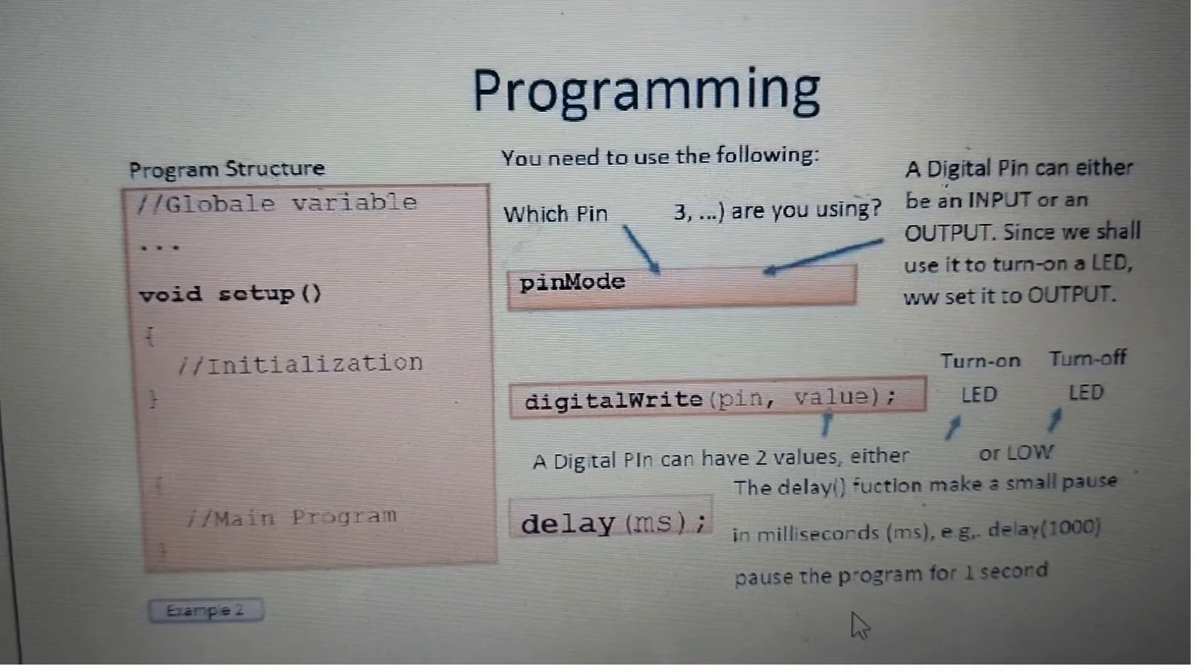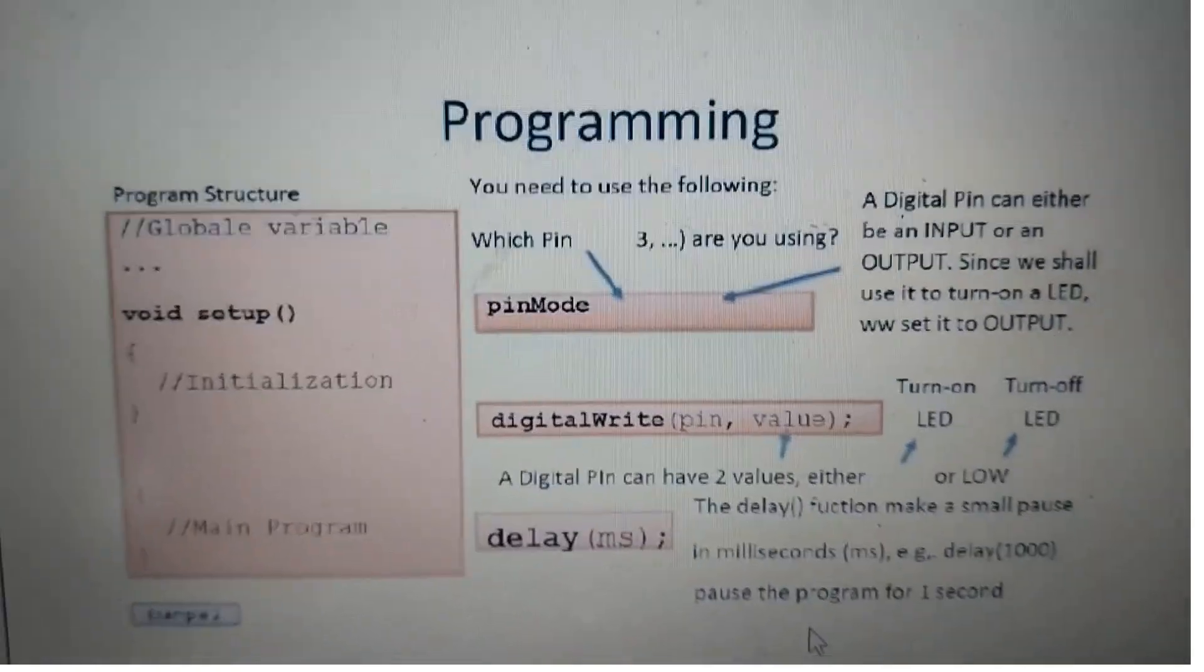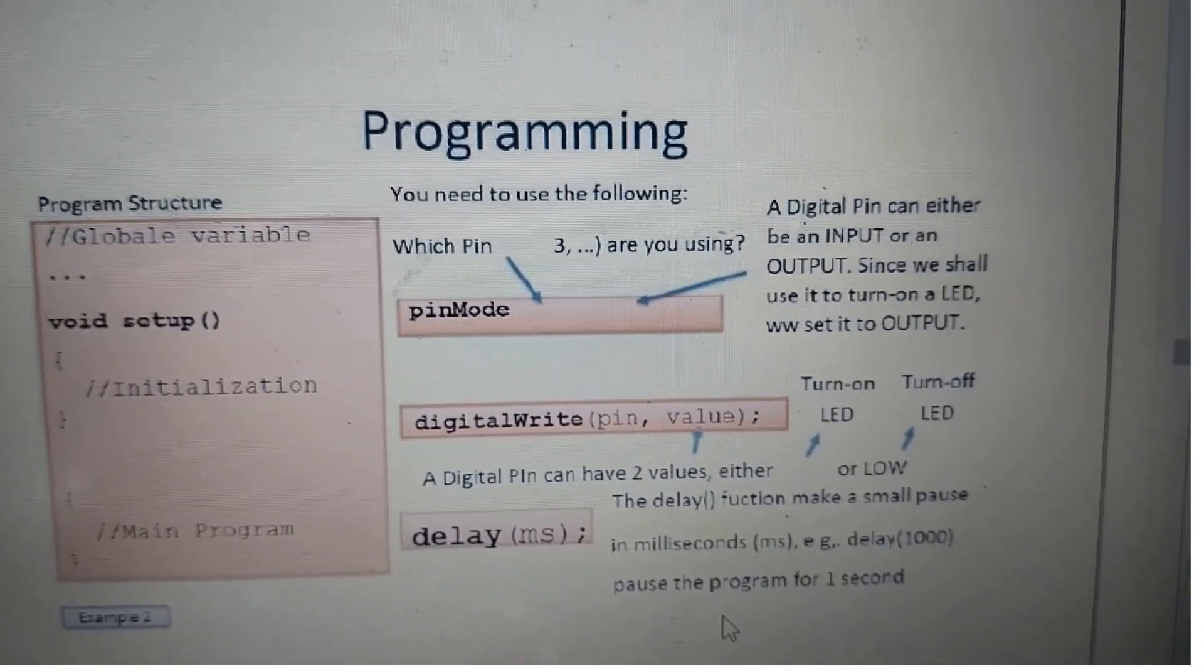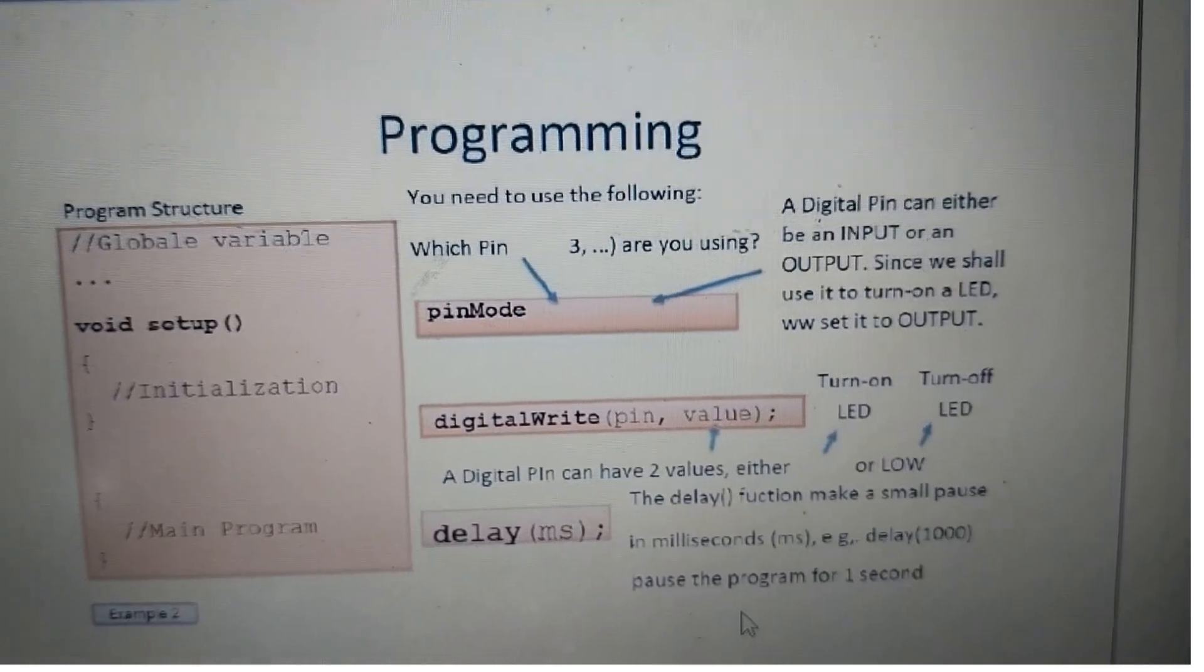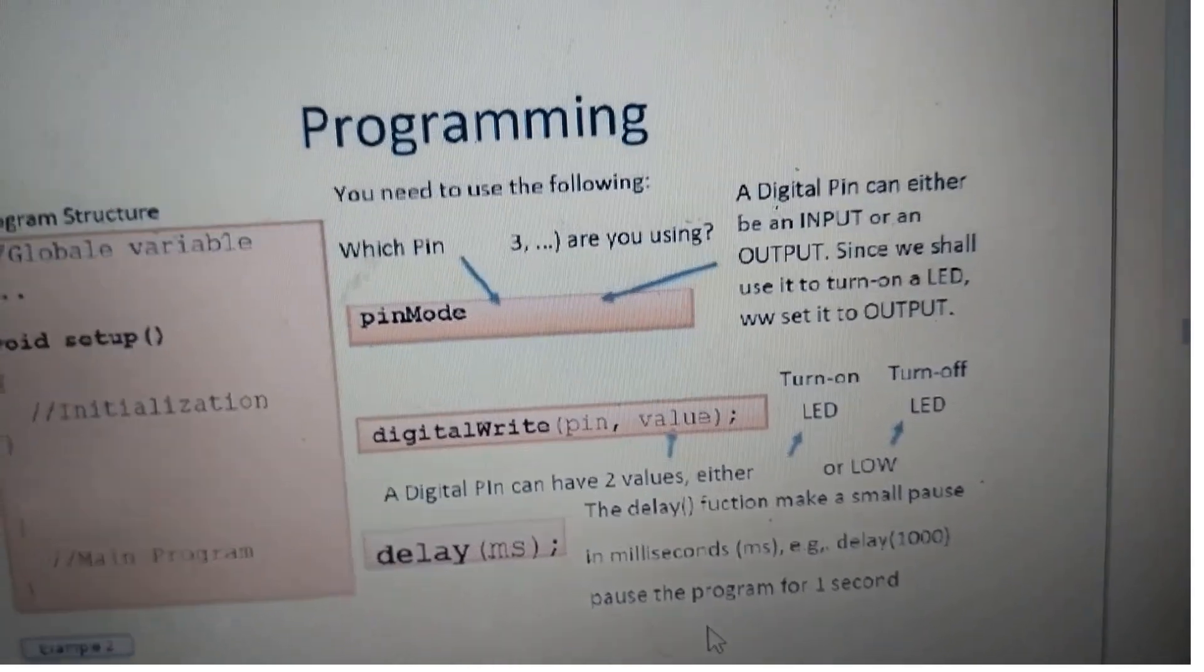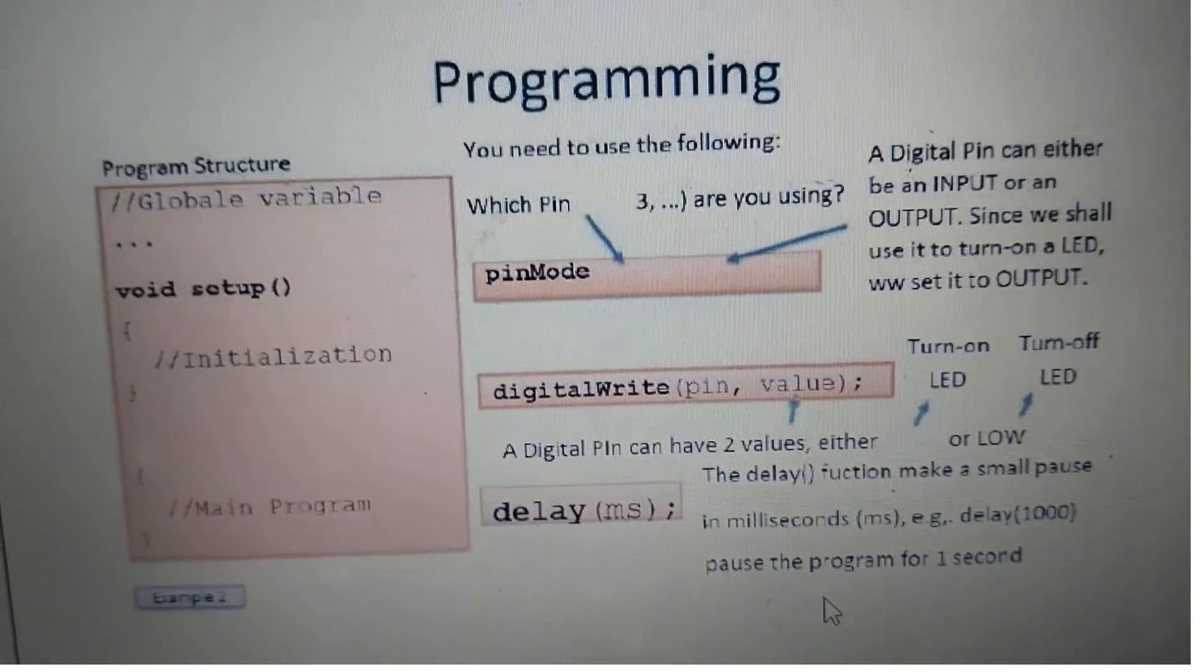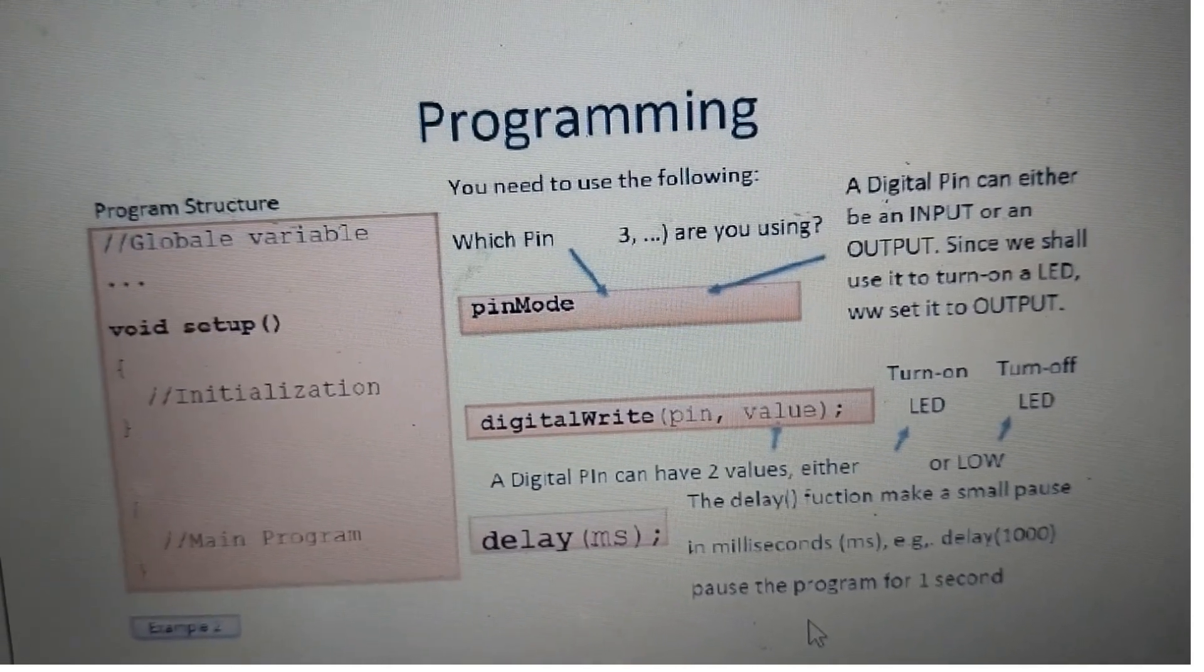You need to use the following: first is pinMode, which specifies which pin you are using. A digital pin can be either an input or an output. Since we shall use it to turn on the LED, digitalWrite with high value means turn on the light, and low means switch off.